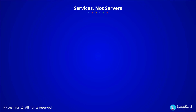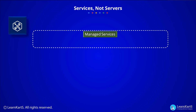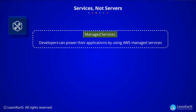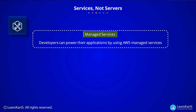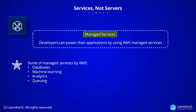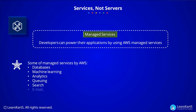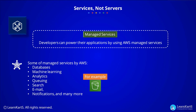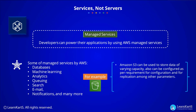Services not servers: AWS offers a broad set of compute, storage, database, analytics, application, and deployment services that help organizations move faster and lower IT costs. Developers can power their applications using AWS managed services that include databases, machine learning, analytics, queuing, search, email, notifications, and more.